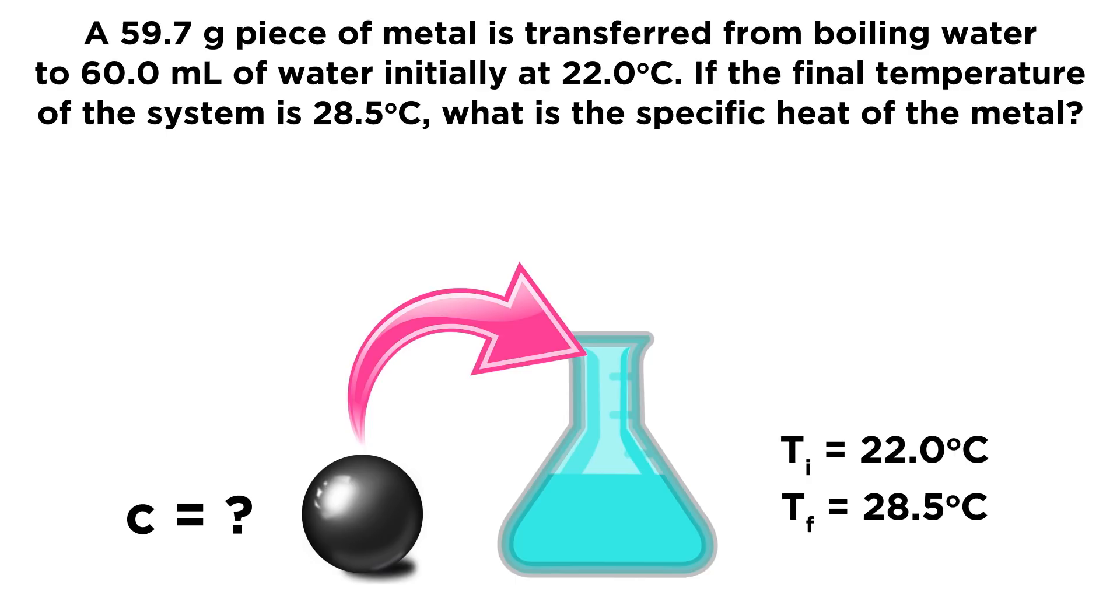So here's all the information. We've got that hot metal that started in boiling water, and we know what temperature boiling water has to be. And we put it in that cold water, and it goes from 22 to 28.5, and we want to find the specific heat. So if this is daunting, go ahead and check out my tutorial on thermochemistry and specific heat and heat transfer, and that will outline what you need to do for this kind of problem. And when you're ready, give it a try.